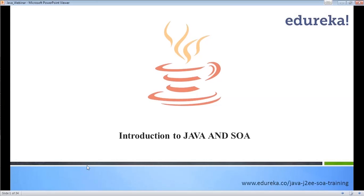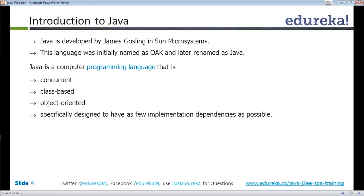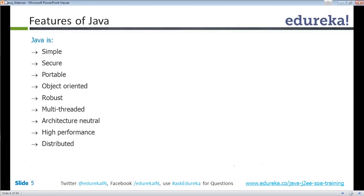Today we are going to learn about Java. Java is developed by Sun Microsystems by James Gosling, and initially it was named as Oak, and later on it was renamed to Java.